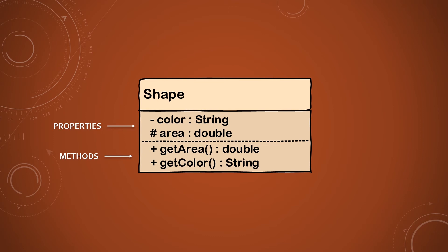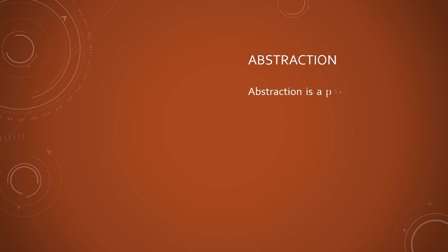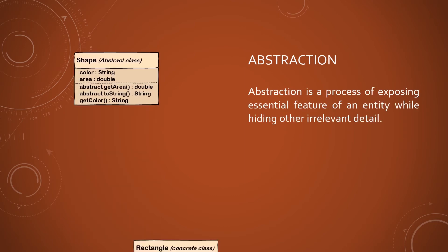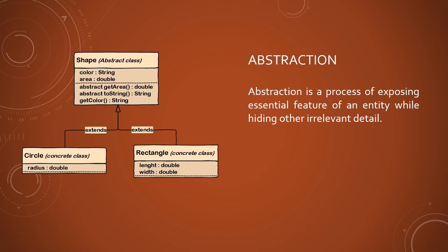Object-oriented design allows you to establish controls to restrict the visibility and access to the members of a class, in such a way that they can protect and hide the data and actions defined in the class from other classes. Abstraction allows objects to interact without having to know the details of how they work.